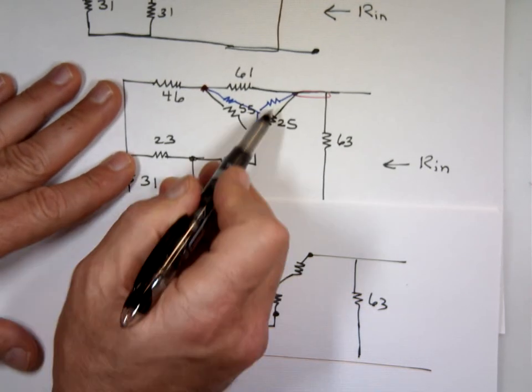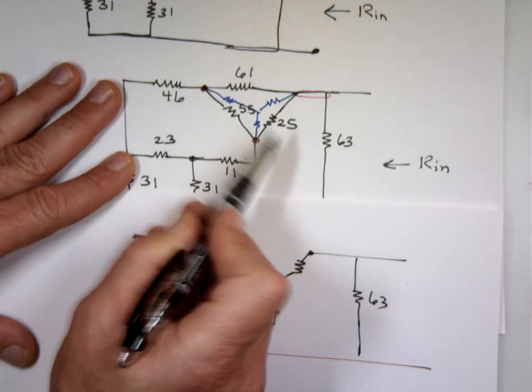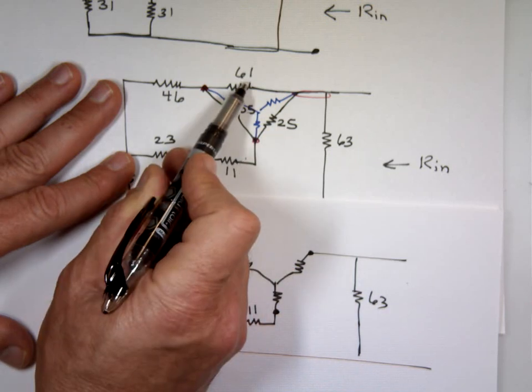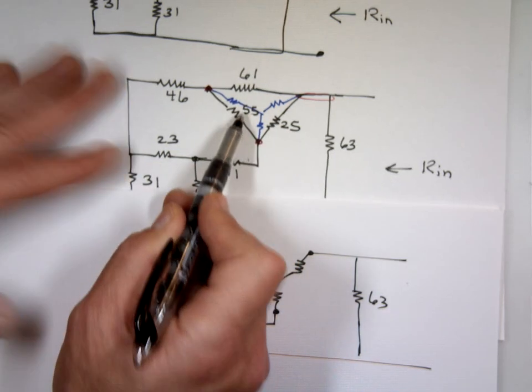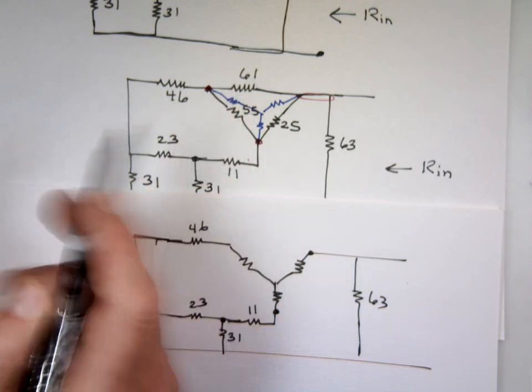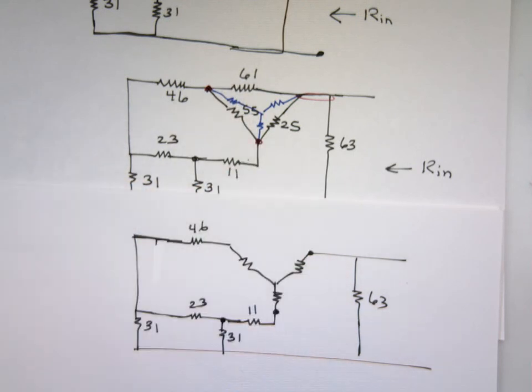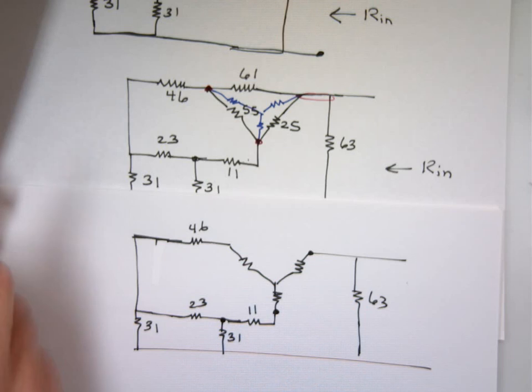Notice this is this one. It's surrounded by this and that. So it's this times this over the sum of them. When you add the three of them, what's 25 and 55? 80 plus 61? 141. So 25 times 61, 25 times 61 divided by 141. 10.8.